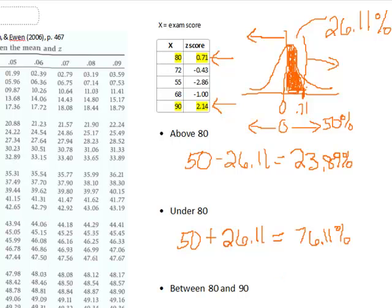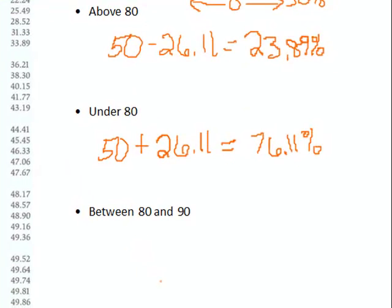The next calculation demonstrates how to get the area between two numbers. In this case, we want to know how many people in our distribution or how many scores fell between 80 and 90, in other words, got a B on our exam. We need two z-scores: the z-score for the 80 and the z-score for the 90, which I've highlighted in the table up top.